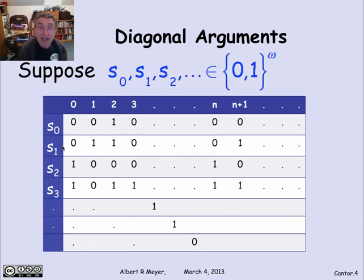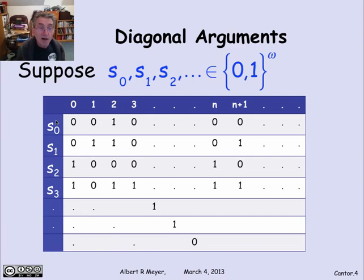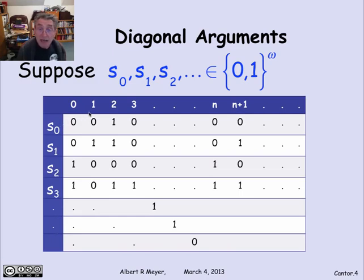S1 is the next infinite binary sequence in this hypothetical list, and it starts 0, 1, 1, 0, and goes on. The row labels are this enumeration of binary sequences, and the column labels are coordinate labels. This is a matrix that's infinite to the right and infinite downward, but it definitely has an upper left corner.